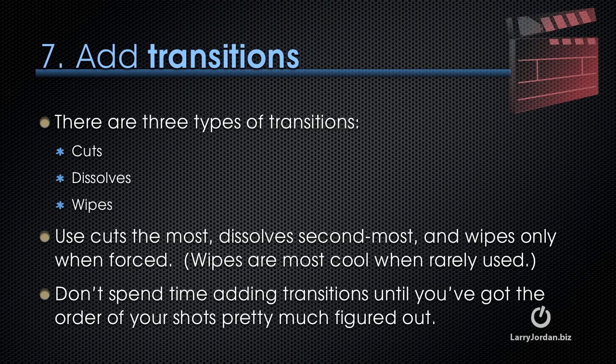Step seven is to add transitions and there are three types: cuts, dissolves, or wipes. You use cuts the most, dissolves second most, and wipes only when forced—because wipes are most effective when they're rarely used. Don't spend time adding transitions until you've got the order of your shots pretty much figured out. You'll add a really cool transition, spend ten minutes tweaking it, and then realize the first shot isn't necessary. You delete it and you've wasted ten minutes. Add transitions after your shots are pretty much in the order you want.